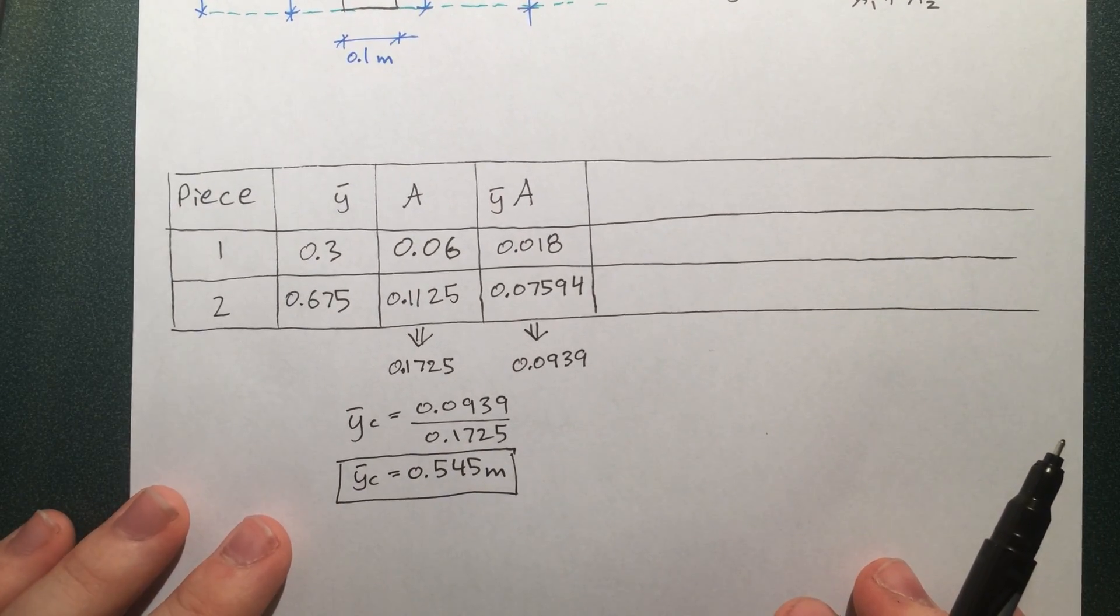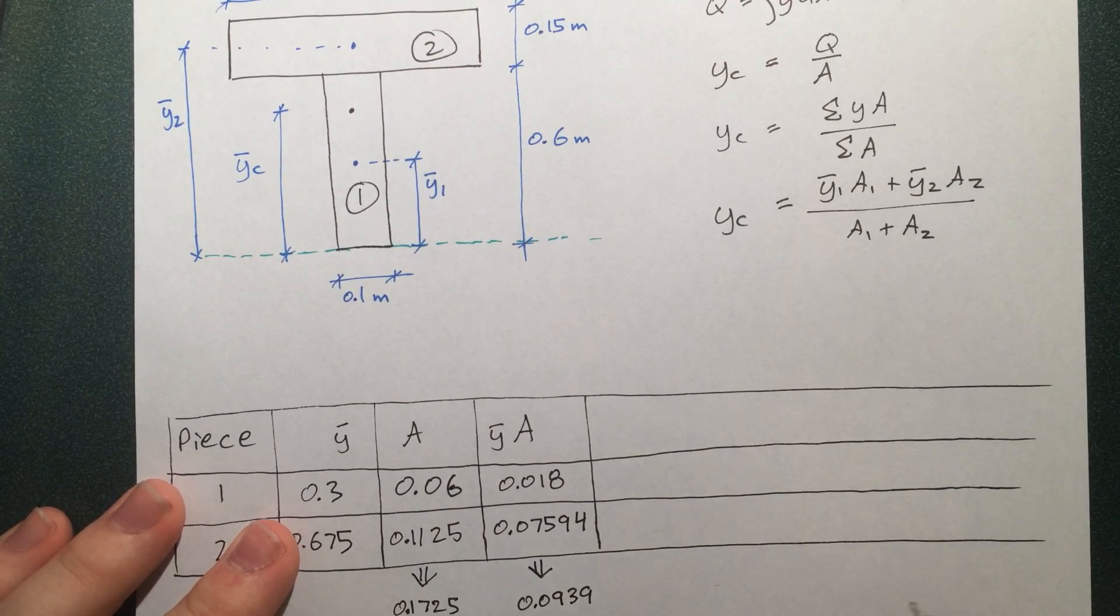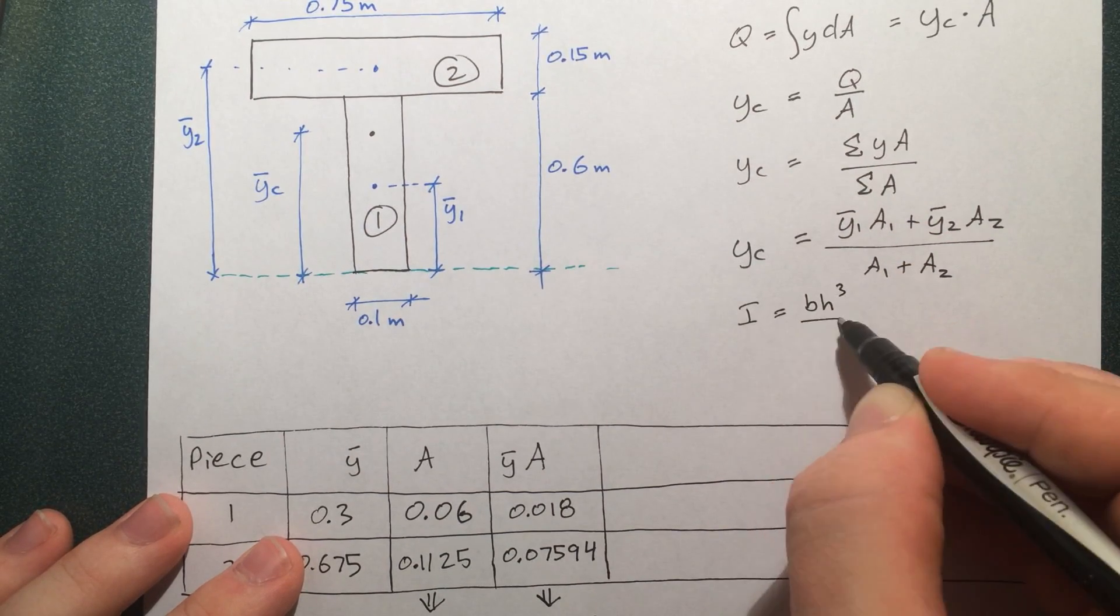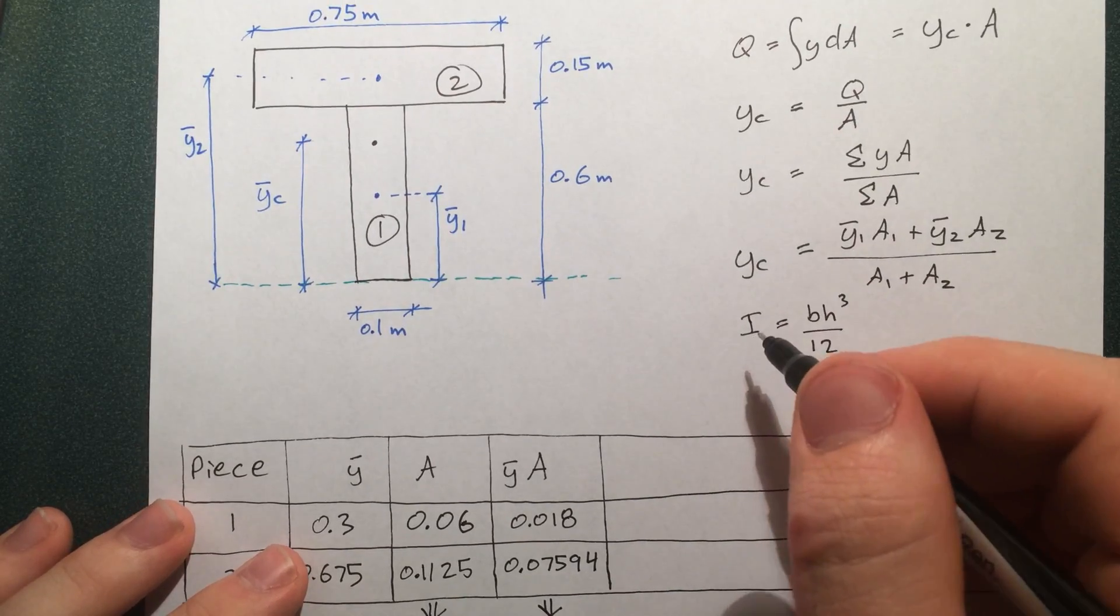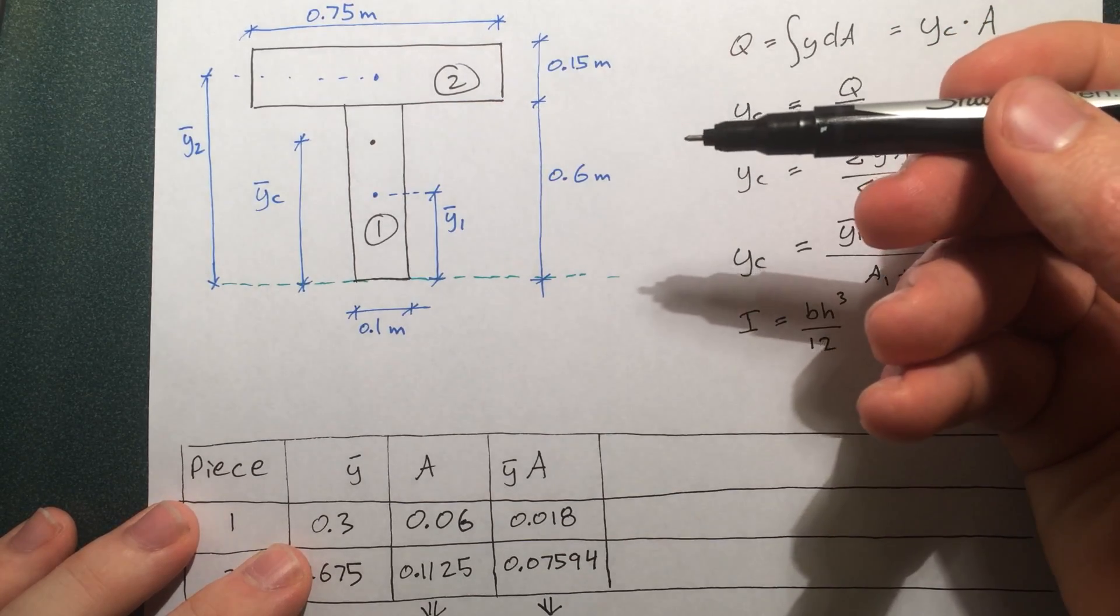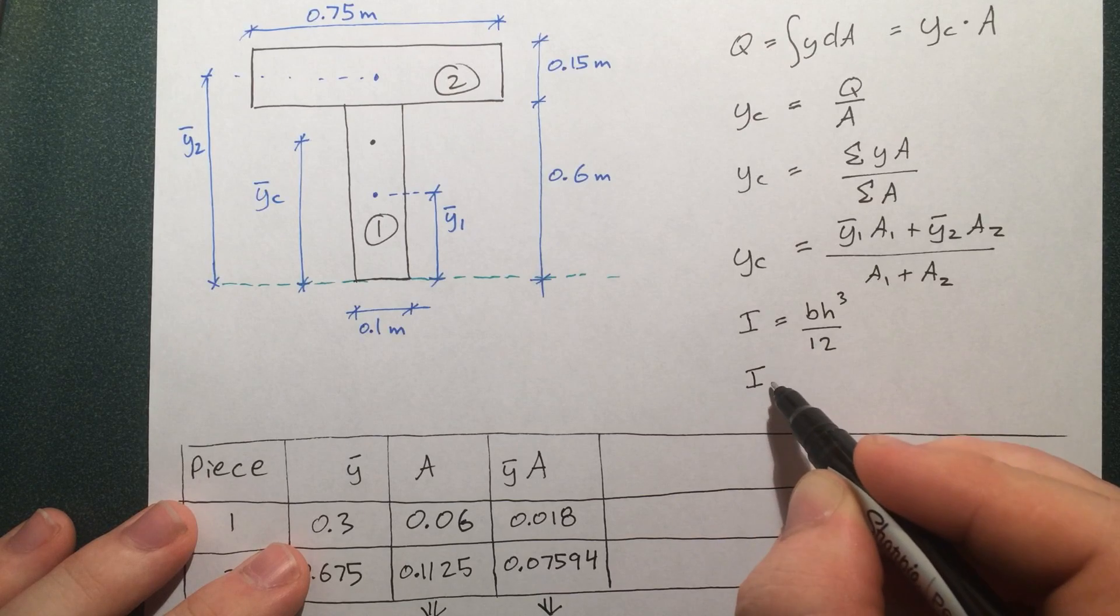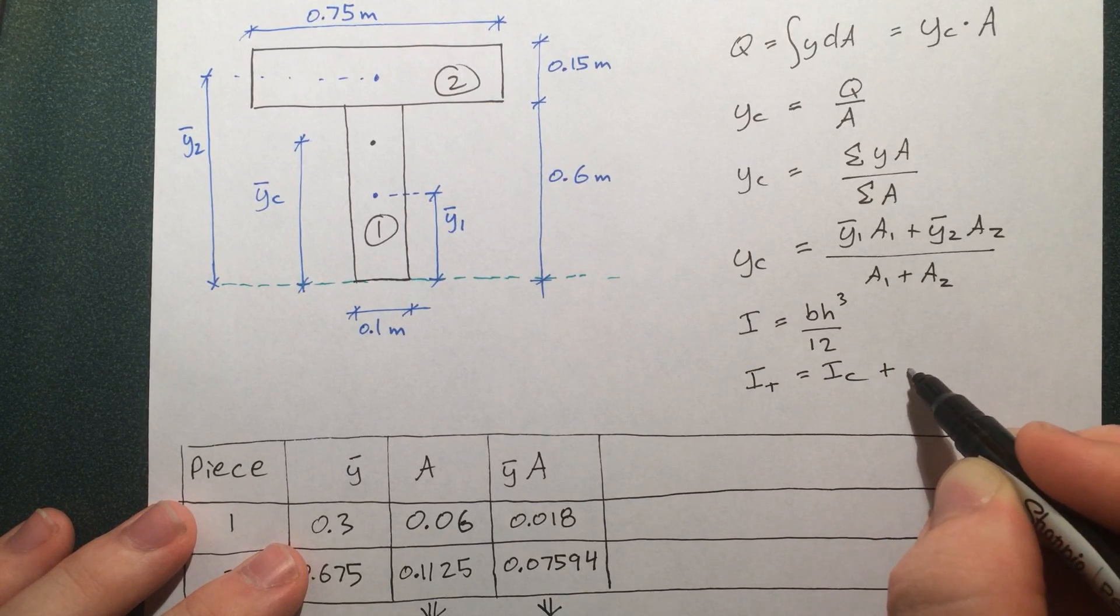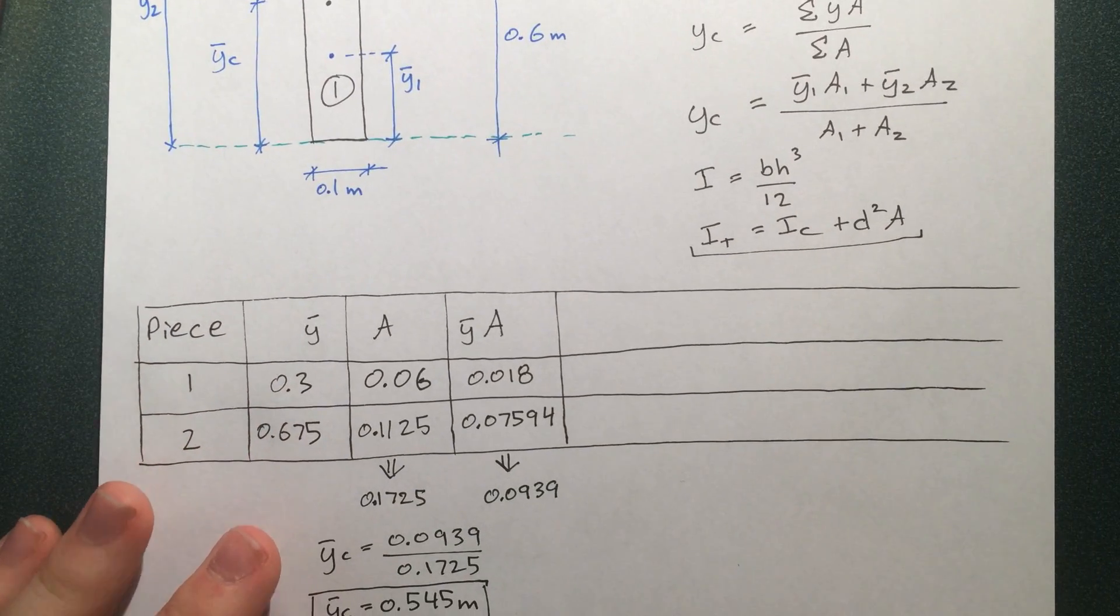Let's go into finding the moment of inertia. We know the moment of inertia of one piece about its own centroid, in the case of a rectangular piece, is bh³/12. Furthermore, we know that the moment of inertia of something that's moved away from its own centroid—acting a distance away—we'll call that total moment of inertia, is equal to I of the piece about its own centroid, plus its distance away squared times its area.